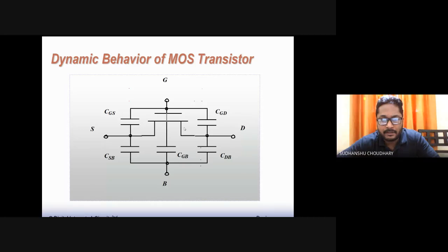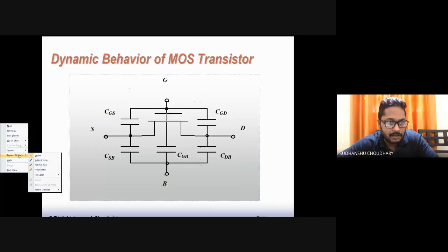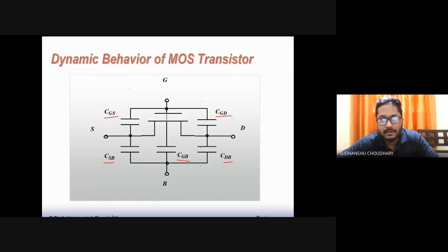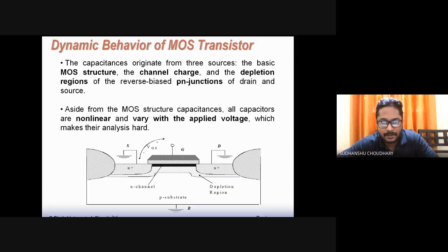In a MOSFET, there are many sources of capacitance. You may have capacitance between gate to bulk, source to bulk, drain to bulk, gate and source, and gate to drain. All these capacitances appear because of the structure of the MOSFET — the structure defines the origin of these capacitances.